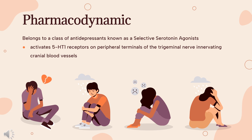Narotriptin has only weak affinity for 5-HT1A, 5-HT5A, and 5-HT7 receptors, and no significant affinity or pharmacological activity at 5-HT2, 5-HT3, or 5-HT4 receptor subtypes, or at alpha-1, alpha-2, or beta-adrenergic, dopamine, dopamine-2, muscarinic, or benzodiazepine receptors. This action in humans correlates with the relief of migraine headache.